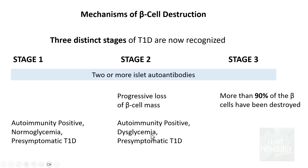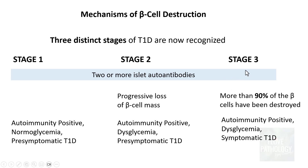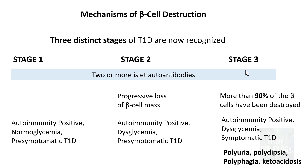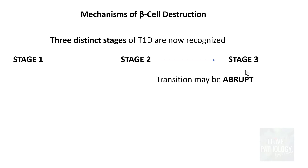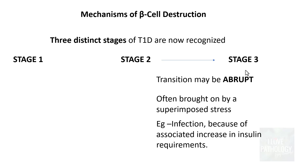In stage 3, when more than 90% of the beta cells are destroyed, autoimmunity is positive, there is dysglycemia, and it is now symptomatic type 1 diabetes mellitus. Symptoms include polyuria, polydipsia, polyphagia, and ketoacidosis. The transition from stage 2 to stage 3 can be abrupt, brought about by superimposed stress, particularly infections, because infections are associated with an increased insulin requirement.